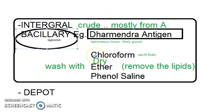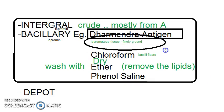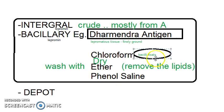An example of bacillary antigen is Dharmedra antigen, named after the scientist who prepared it. What he did was he took the lepromatous tissue, finely ground it, then added chloroform — the bacilli will float. He collected all the bacilli and dried them.